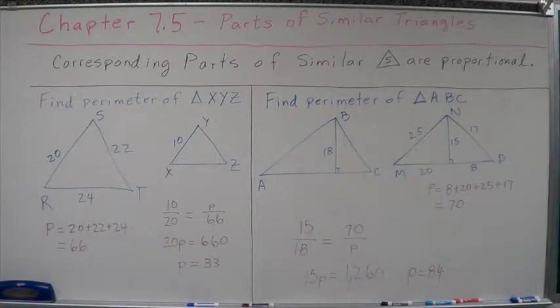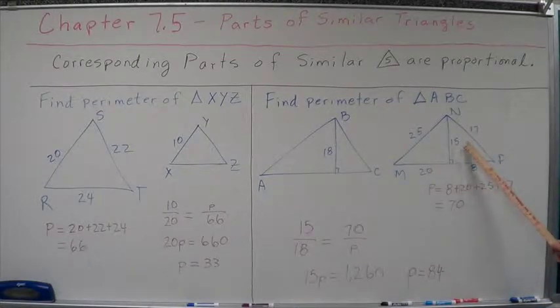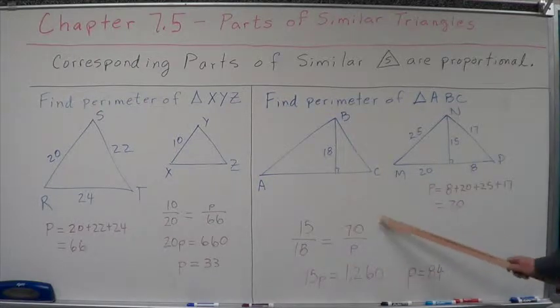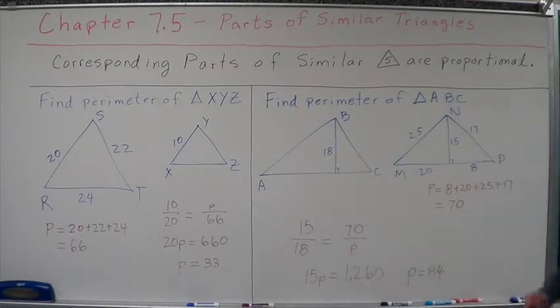We have all the pieces here, so we can find the perimeter of MNP, and we add all those together. 8 plus 20 plus 25 plus 17 equals 70. Now let's set up our proportion. 15 is to 18 as the perimeter of this triangle is to the perimeter of this triangle.